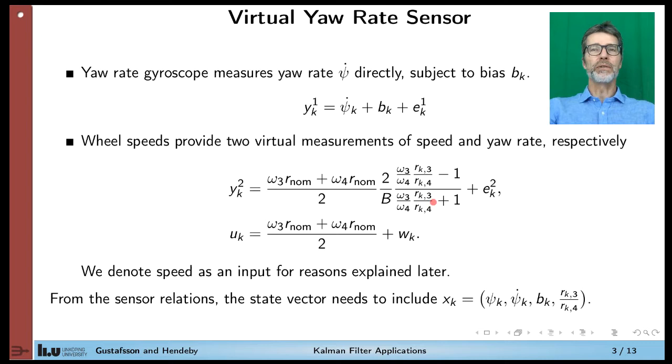If you look at this from a Kalman filter perspective, we need to determine what to include in the state vector. And from these three measurements, we need at least to have the yaw angle, the yaw rate, the bias of the gyroscope, and this ratio between the wheel radius. We can also note that we denoted the car speed here with u_k indicating that we consider this to be an input to the Kalman filter. More on this later on.